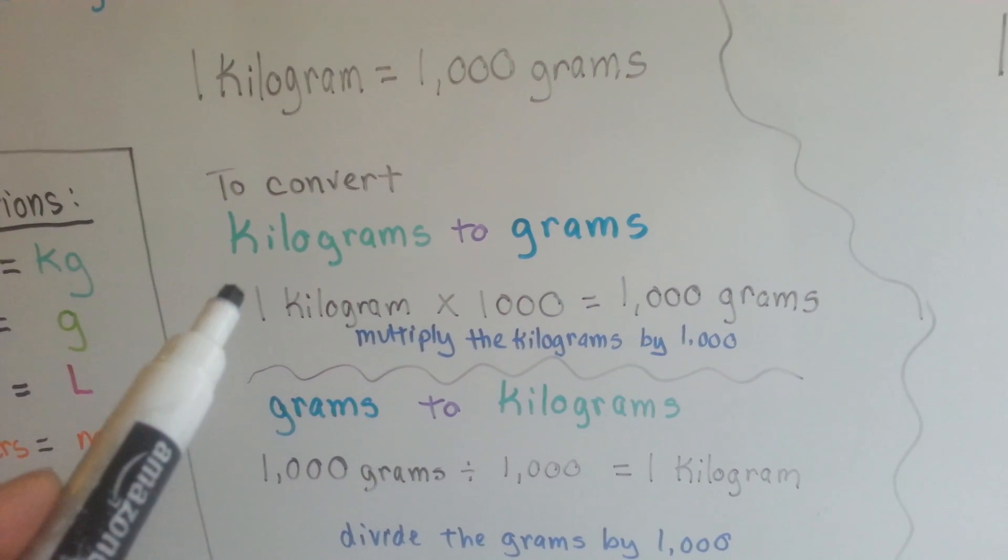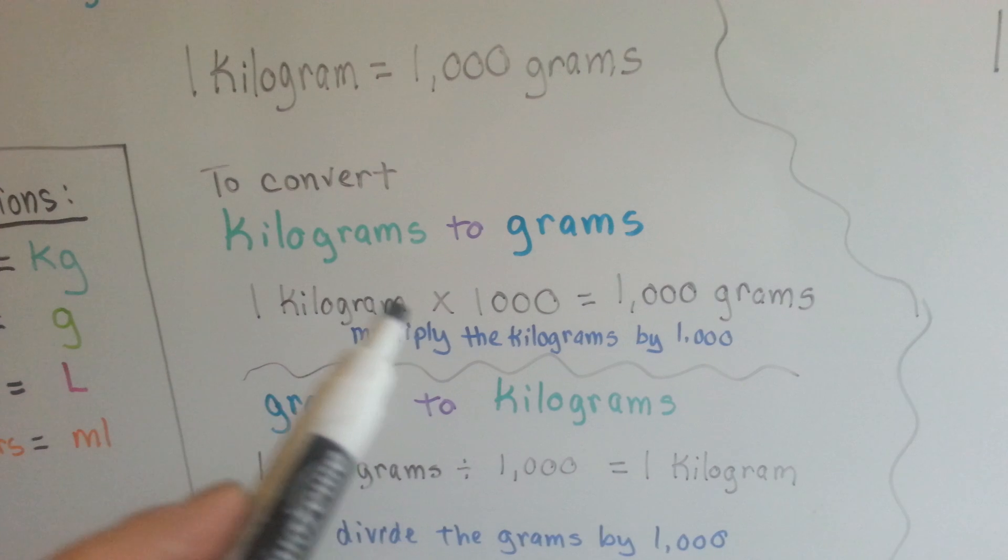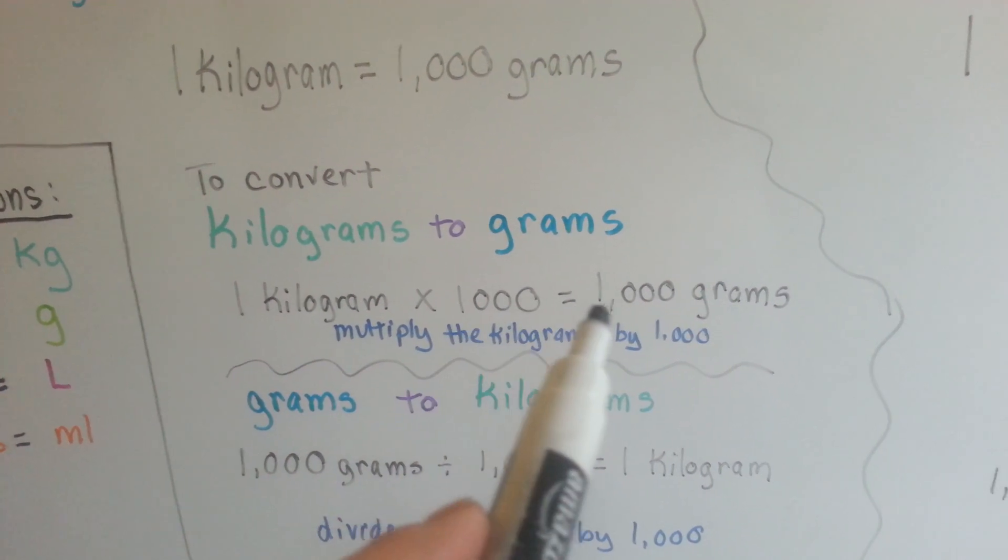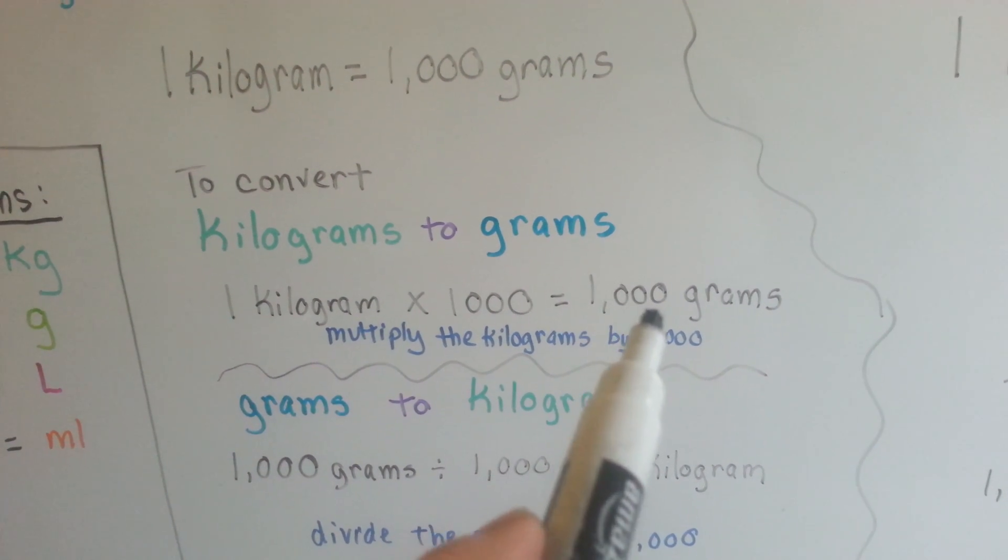If you have four kilograms, you can multiply the four kilograms times a thousand and know that you've got four thousand grams. See?